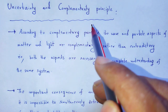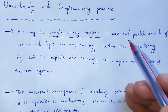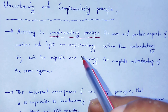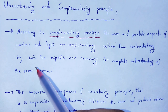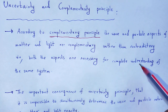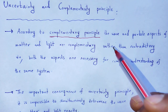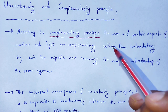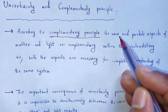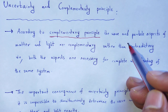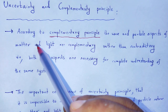What is Complementarity Principle? According to Complementarity Principle, the wave and particle aspects of matter and light are complementary rather than contradictory. Both aspects are necessary for complete understanding of the same system. We know wave-particle duality means a particle shows both wave as well as particle characteristics, whereas a wave also shows particle characteristics. If we consider matter, it shows wave as well as particle characteristics.